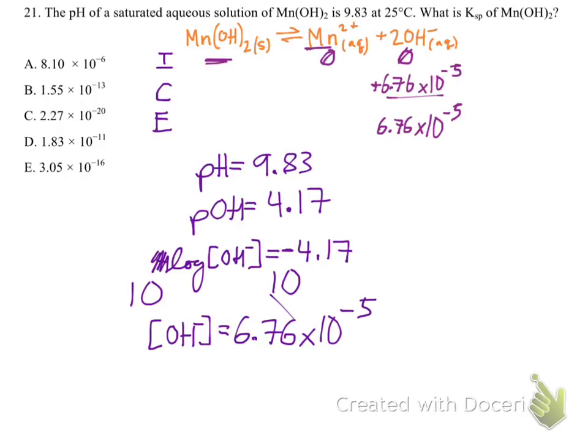So the manganese, we only get one manganese for every two hydroxides. So that means that to find the change of this, it's going to be plus one half of the 6.76 times 10 to the negative fifth. I did not plan the spacing very well. Which means that we're going to have 3.38 times 10 to the negative fifth molar manganese at equilibrium. And really, we don't care about this stuff here. It's not going to be relevant.